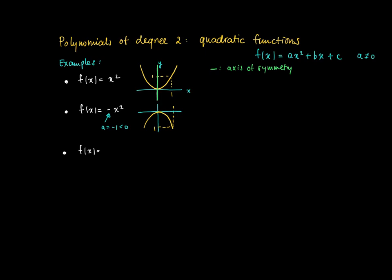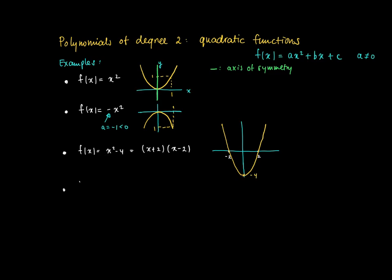Now consider another example: f(x) = x² - 4. This is just a translation of the graph from the first example. But there's also another way to look at it — we can factorize this as (x + 2)(x - 2). The graph of f crosses the x-axis two times: once at x = -2 and once at x = 2. The minimum value is -4, which is the top. Since a is positive, we have a parabola opening upward.